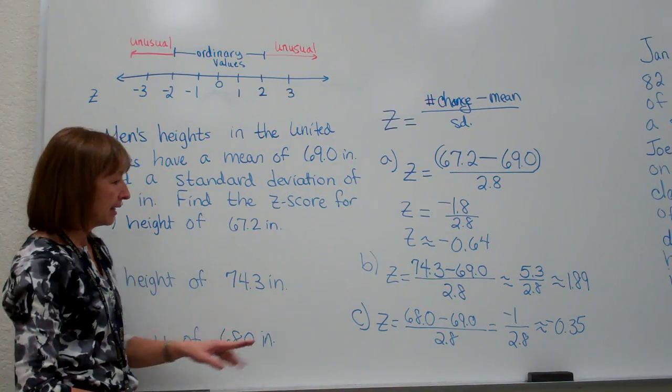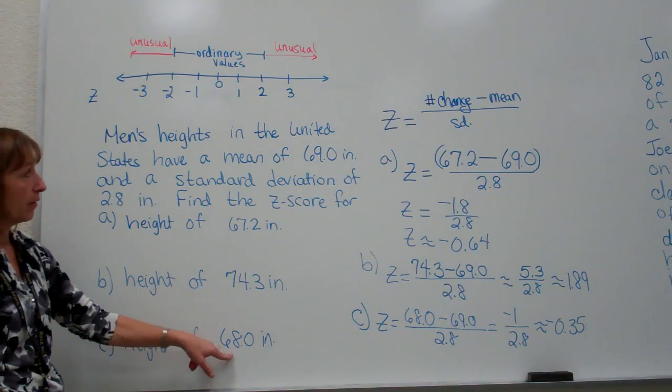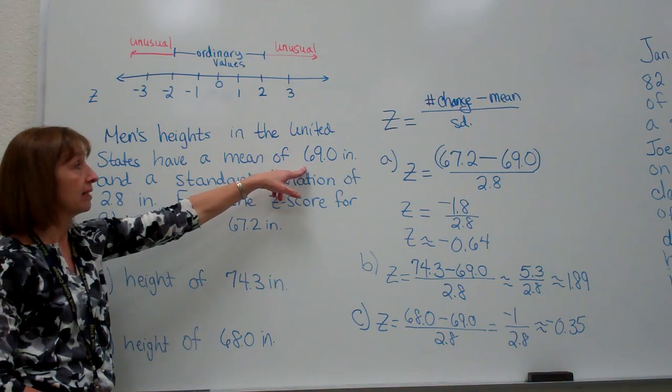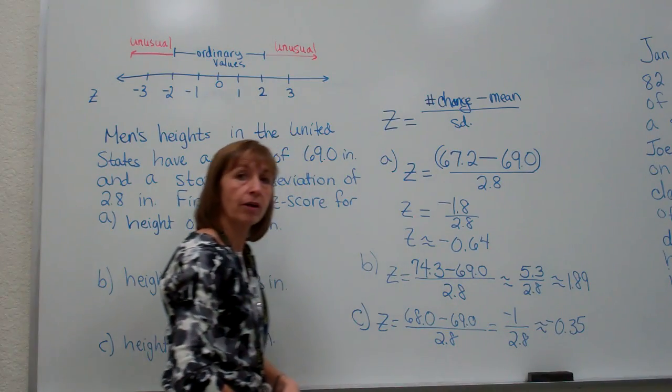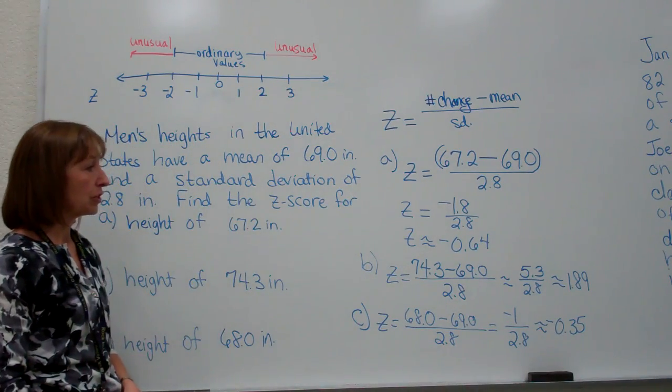And then the final one, my 68.0 is smaller than the mean, 69, so again I got a negative z-score for that value. So just to recap...